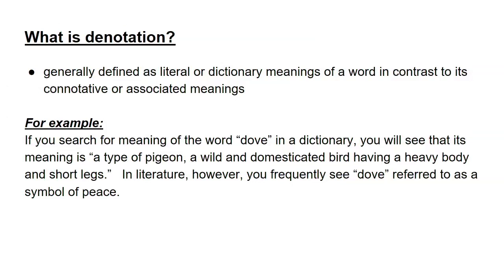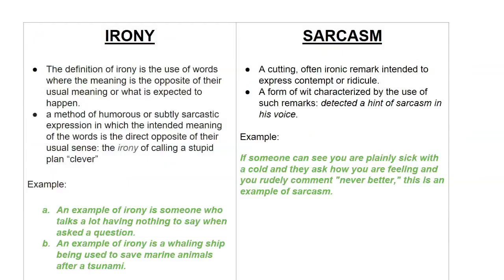Now we're getting to the second part — the poetry and literature section. Denotation is generally defined as the literal or dictionary meaning of a word, in contrast to its connotative or associated meanings. For example, if you search for the meaning of the word 'dove' in a dictionary, you will see it is a type of pigeon — a wild and domesticated bird. In literature, however, dove is frequently referred to as a symbol of peace. The literal and figurative meanings are two different things.